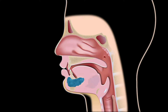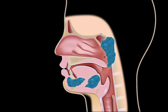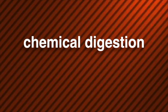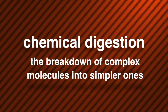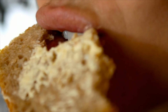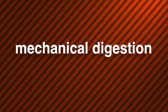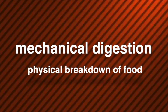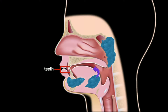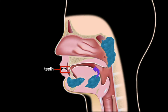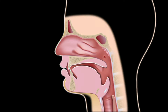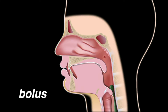Food processing begins in your mouth. Saliva, produced from glands in your tongue, cheek, and jaw, begins to break down the chemicals in food and helps make the food mushy so it's easier to swallow. Saliva is part of chemical digestion — the breakdown of complex molecules into simpler ones using water, acids, and enzymes. Another type is mechanical digestion, the physical breakdown of food. Your teeth perform the first stage of mechanical digestion, turning the food into slippery mush called bolus. Your tongue then helps push the bolus into the opening of your esophagus.